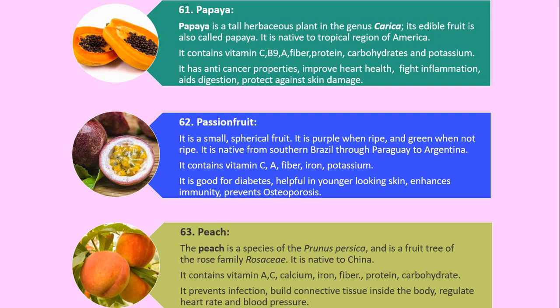Number 63. Peach. The peach is a species of Prunus persica and is a fruit tree of the rose family Rosaceae. It is native to China. It contains vitamin A, C, calcium, iron, fiber, protein and carbohydrate. It prevents infection, builds connective tissue inside the body, and regulates heart rate and blood pressure.